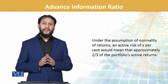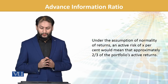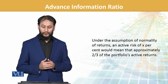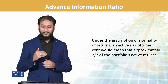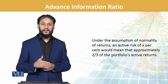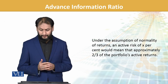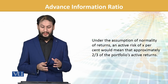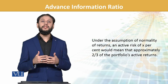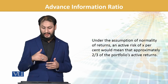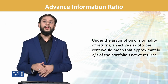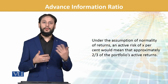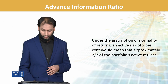Under the assumption of normality of returns, an active risk of x percent would mean approximately two-thirds of the portfolio's active return is reflective of this. Basically we want to develop a linkage — by taking active risk, what are we achieving? Are we going to get it or not? That is the important point here.